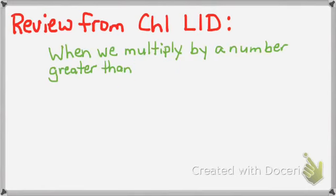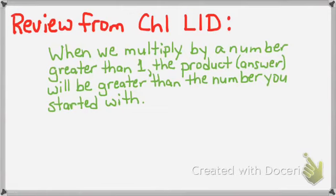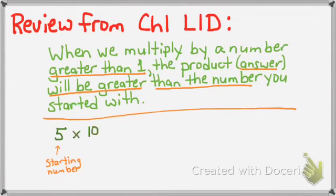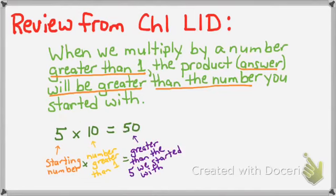When we multiply by a number that's greater than 1, the product, or the answer, will be greater than the number you started with. If I take 5 as my starting number and multiply it by 10, which is a number that's greater than 1, my answer should be greater than the number I started with. What's 5 times 10? 50. And 50 is greater than the 5 we started with, and if we look at the pictures, we see that that makes sense.